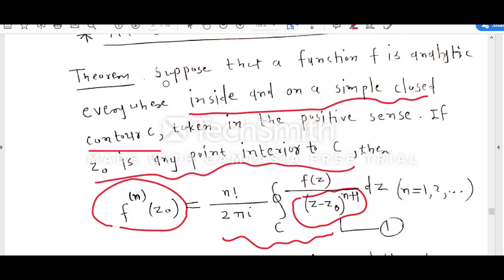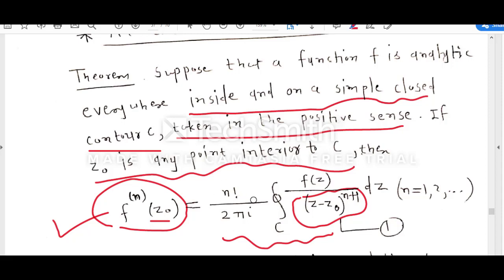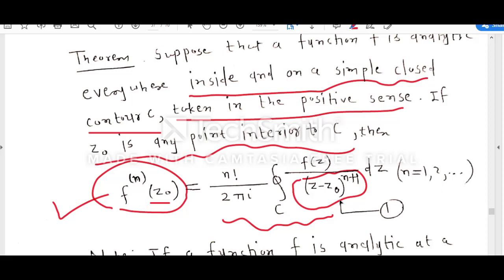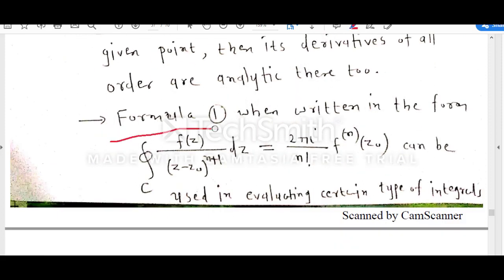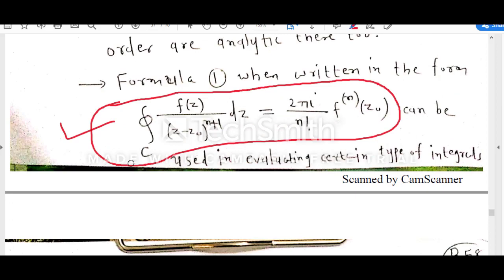Suppose that a function f is analytic everywhere inside and on a simple closed contour C, taken in the positive sense, meaning counterclockwise direction. If z₀ is any point interior to C, then the nth derivative of function at point z₀ is n factorial upon 2πi. So using this formula, if we have f(z) divided by z minus z₀ raised to n plus 1, we can apply Cauchy integral formula to evaluate contour integrals of this form.